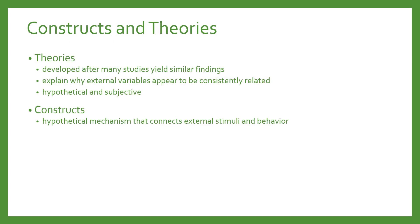A theory is developed after many studies yield similar findings. After a lot of replications happen that yield similar results, you can start to develop a theory, which is more of an overarching explanation for why external variables appear to be consistently related in research. A theory is the underlying reason why we see the things that we see that are observable — why are the results reliable across these studies? Theories are hypothetical and subjective because observing why is often impossible to do objectively, but it's based on a body of past research that shows things are related in a certain way.